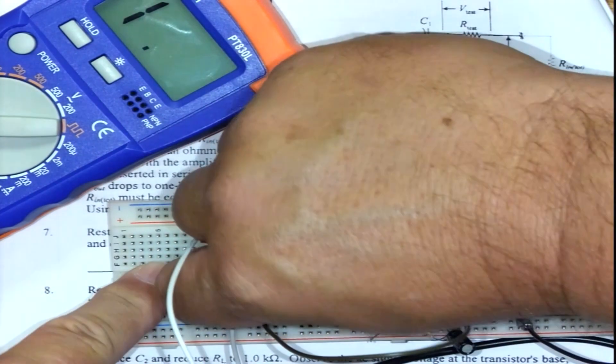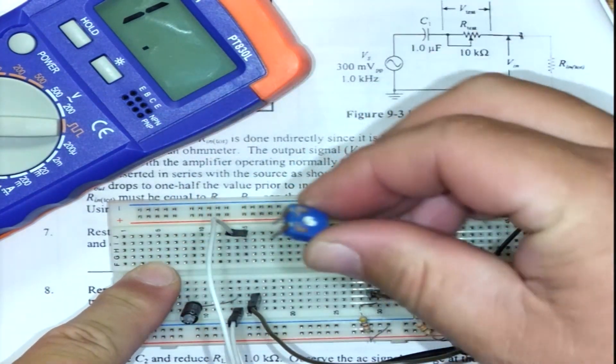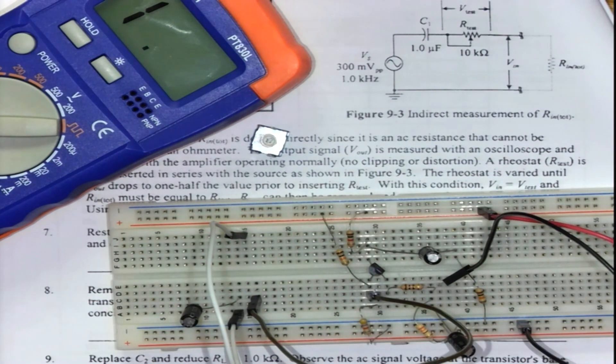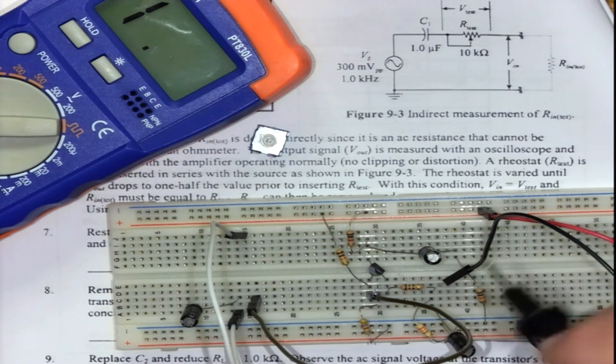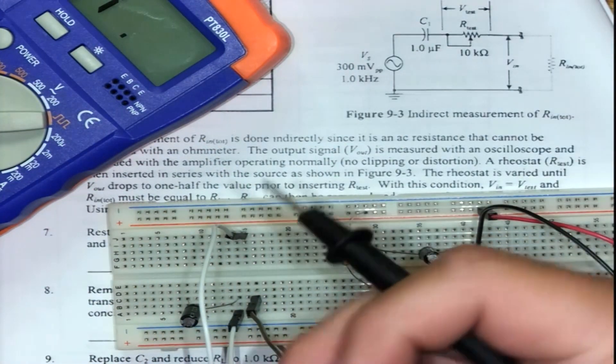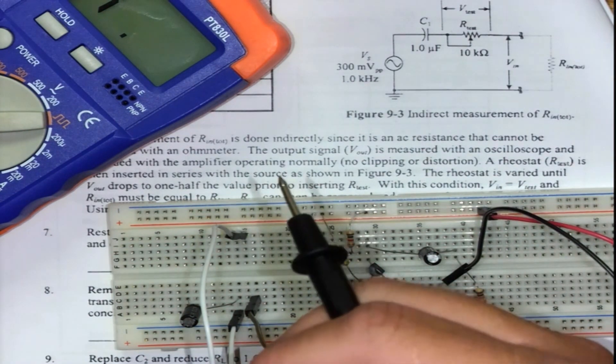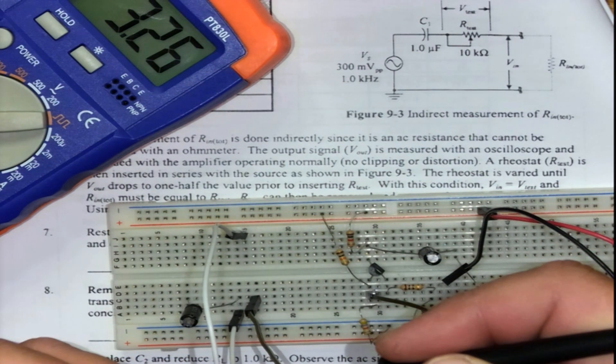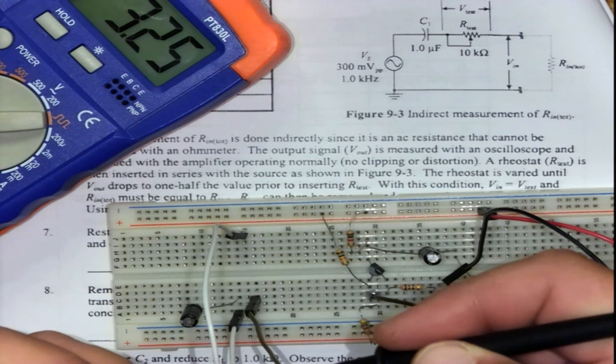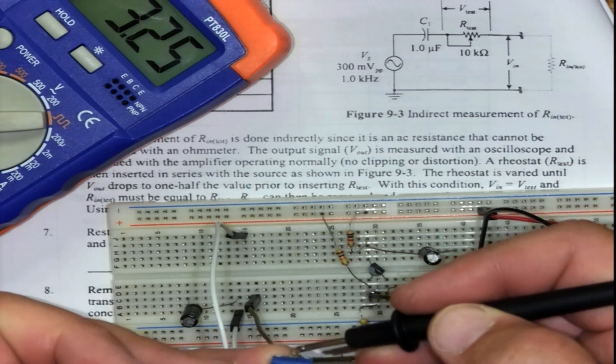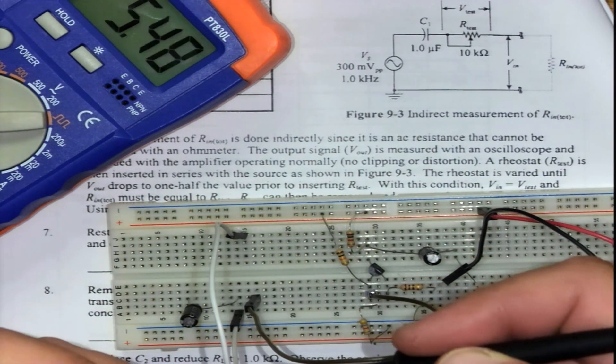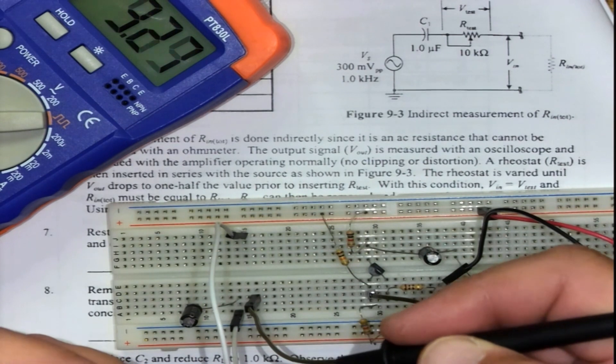If I change that we observe the output until it is half of what was the full output without this component. Once we reach half then we're going to pull out the resistor and measure it. We use this side and this side. I get 3.25 for this example, not necessarily the correct answer, just to show you the method.